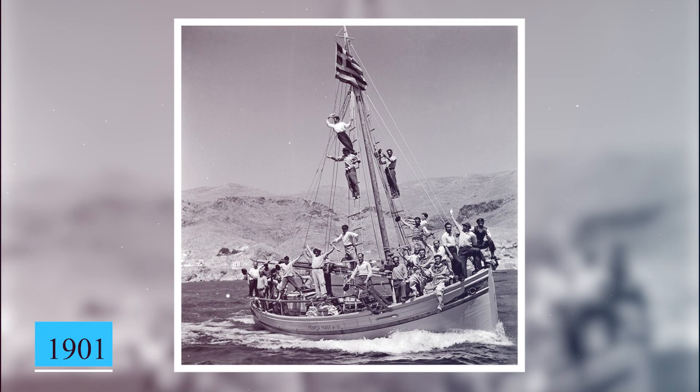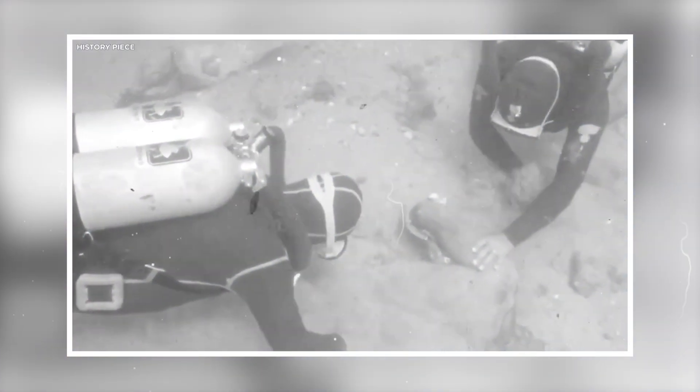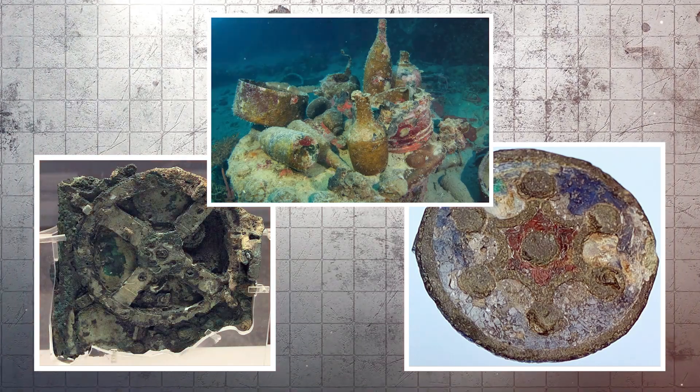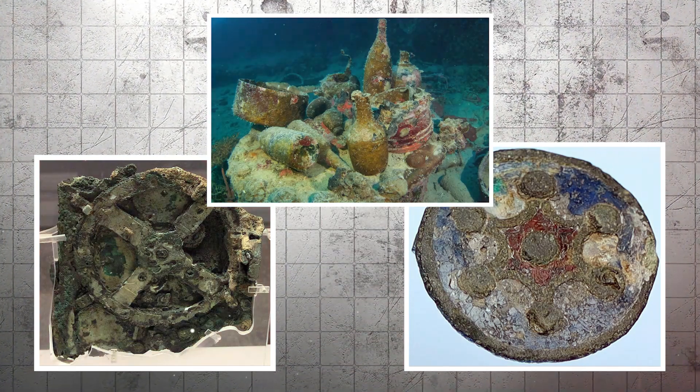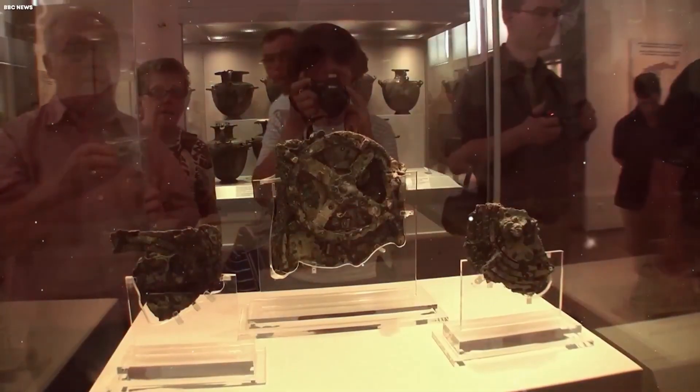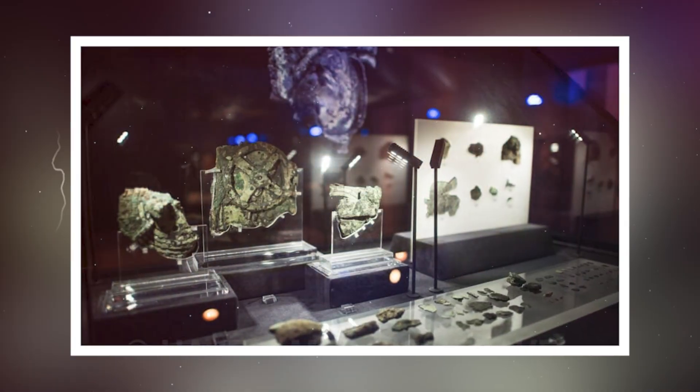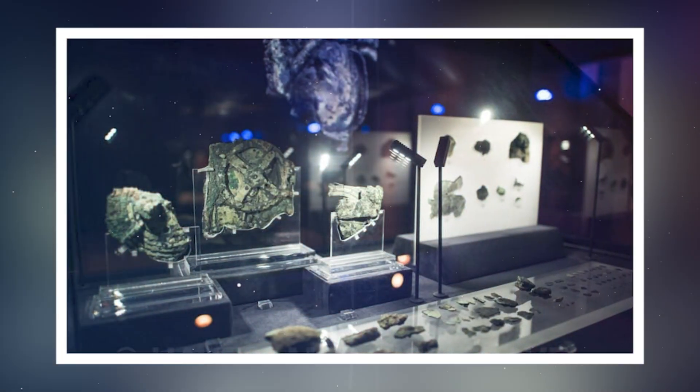Over the next year, the Greek navy joined the divers. They brought up statues of marble and bronze, jewelry, coins, glassware, and countless fragments of decayed metal. By 1902, these treasures were unpacked at the National Archaeological Museum in Athens. Among them sat a small, unimpressive lump of bronze and rotted wood. It looked like nothing, just debris from a forgotten ship.